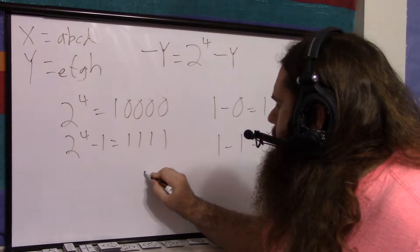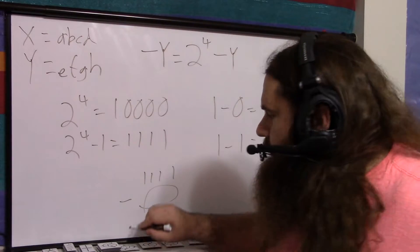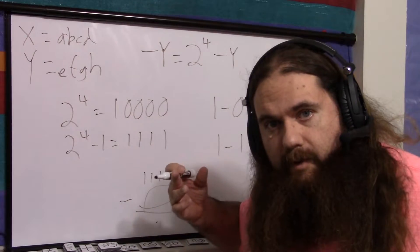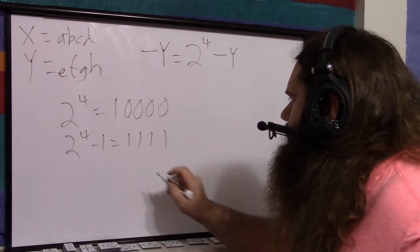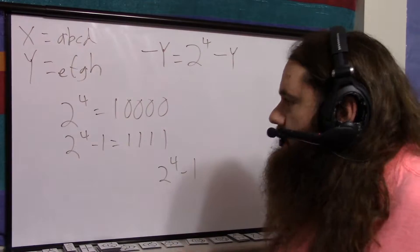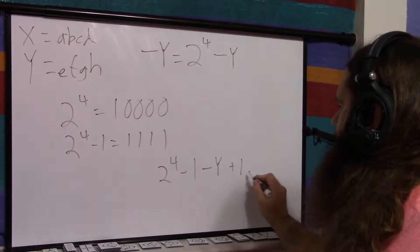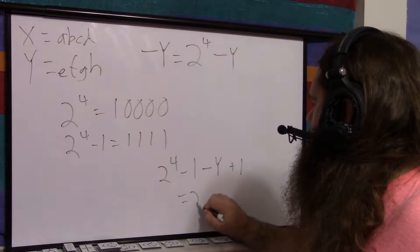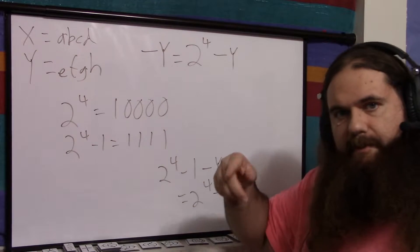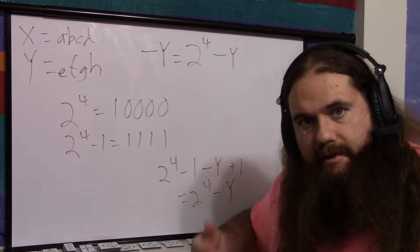So if we have 1, 1, 1, 1 minus a four-bit number, then the result is the four-bit number with all the bits flipped. And then we can add 1. If we have all 1s — which is 2 to the 4 minus 1 — then we subtract the number we want to flip: minus Y. Then we add 1. That minus 1 plus 1 equals 2 to the 4 minus Y. And that's where that comes from. Flip the bits and add 1 is exactly the same as 2 to the 4 minus the number.